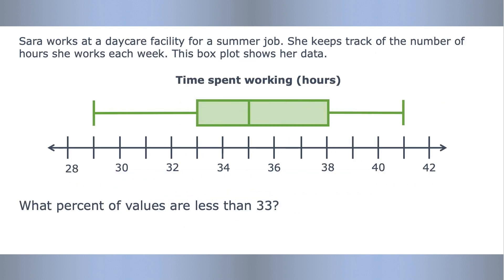Sara works at a daycare facility for a summer job. She keeps track of the number of hours she works each week. This box plot shows her data. What percent of the values are less than 33? First, let's find 33 on the box plot. It looks like 33 is on the left edge of the box. That's the lower quartile, which means 25% of the values would be less than 33. So the answer is 25%.